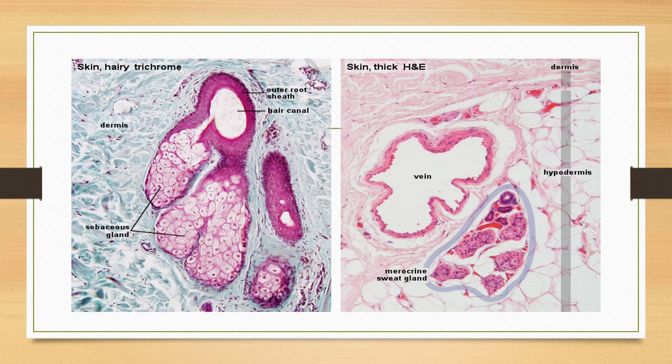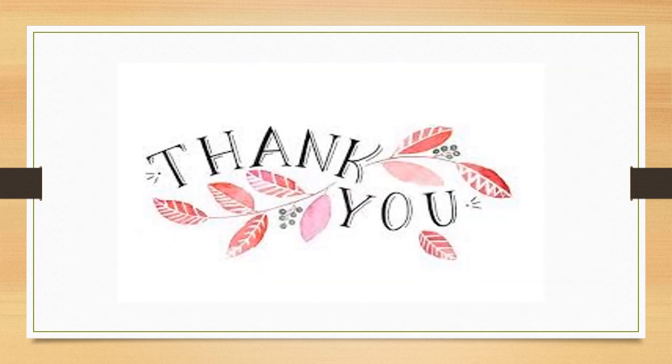The photomicrograph shows a serous gland — identify the type of this serous gland. These are the types of merocrine sweat glands; find out what type of gland this is. Thank you.